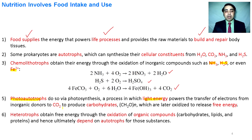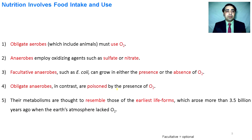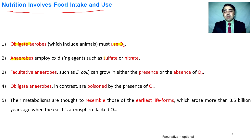Photo-autotrophs essentially utilize light energy and convert carbon dioxide into carbohydrates. These carbohydrates are further utilized to produce free energy. Heterotrophs obtain free energy from the oxidation of organic compounds, including carbohydrates, lipids, and proteins. Thus, heterotrophs depend upon organic compounds for their energy requirements.